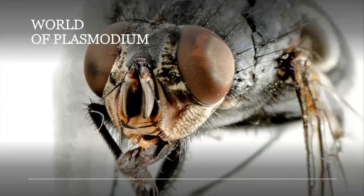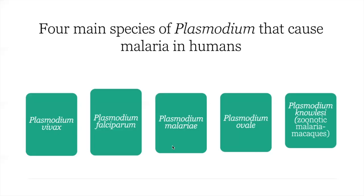There are four main species of Plasmodium that can cause malaria in humans: Plasmodium vivax, Plasmodium falciparum, Plasmodium malariae, and Plasmodium ovale. There is also Plasmodium knowlesi, which does not affect humans directly but is zoonotic — it is seen in monkeys, particularly the macaques.